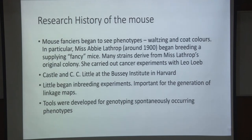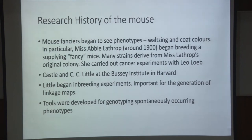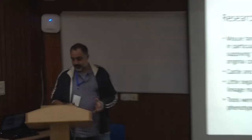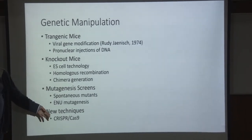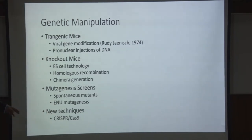Coming up to about the 1960s now — what I want to talk about is what we can do with mouse. The main advantage of mouse is genetics: the ability to do inbreeding, the spontaneous mutations that have arisen, and their closeness to humans. For the next 10 minutes, I'll talk about the tools we can use to harness these powers: transgenic mice, knockout mice, mutagenesis screens, and the future of mouse genetic technology.